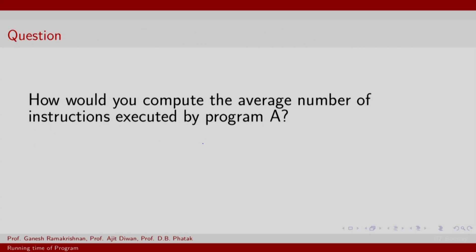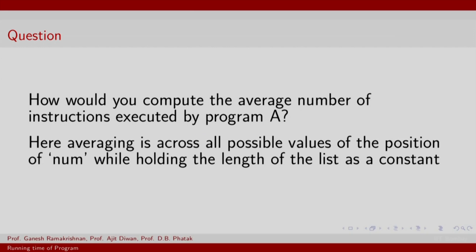So, how you compute the average number of instructions executed by program A. And when we talk of average, we mean what? We mean average across all possible values of the position of num or the element E, while holding the length of the list as a constant. So, this is the kind of average we get interested in. Why is this so? Well, we have already seen that looking at the time as a function of num is not really meaningful. However, looking at the time as a function of length is meaningful.